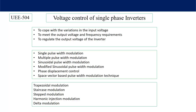Modified sinusoidal pulse width modulation further improves output voltage quality and reduces harmonics. Phase displacement control combines output voltages from two inverters to obtain better quality. Space vector based pulse width modulation is one of the most popular techniques, with various advantages over other PWM methods — it tracks a reference voltage using six sectors, each of 60 degrees. Further advanced techniques include trapezoidal modulation, staircase step modulation, harmonic injection modulation, and delta modulation.